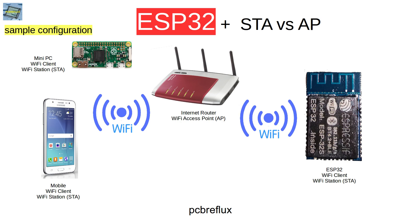Let us first do some definition. What's the difference between the ESP32 as a station, or what's the benefit to use the ESP32 as an access point? If we look at this picture, we see that in a common setup, we use our internet router as a Wi-Fi access point, and all our devices are used as a Wi-Fi station or STA state, and they connect as clients to our Wi-Fi network.